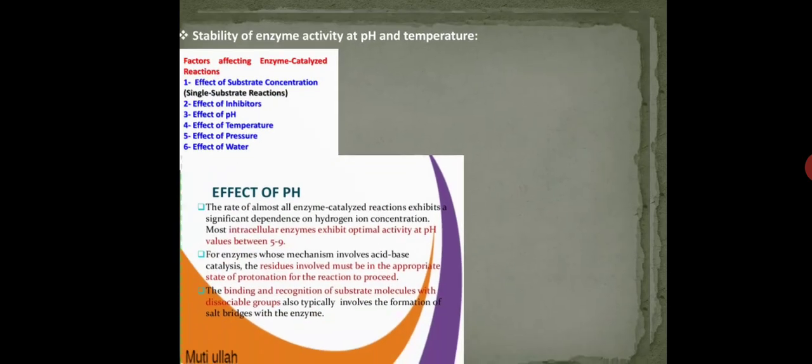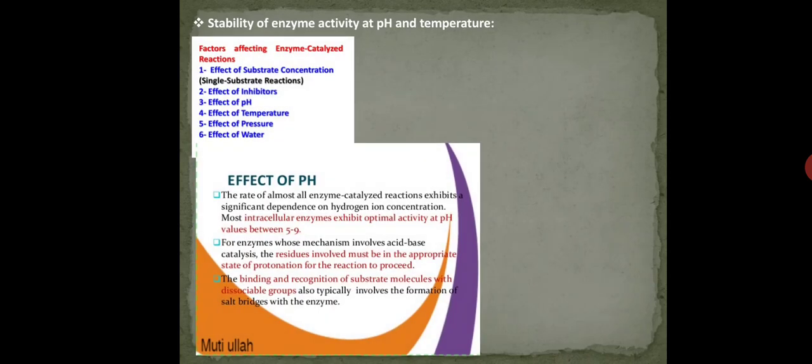So this is the point we are going to discuss in this video: stability of enzyme activity at pH and temperature. This means we have to see that our enzyme which we have purified, which we have done several processes to, is active at which pH and temperature. Specifically pH and temperature. The points which are included in your syllabus are pH and temperature.